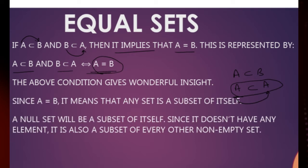A null set will be a subset of itself. Since it does not have any element, it is also a subset of every other non-empty set. So we get two very important results: every non-empty set will have at least two subsets — the set itself and the empty set.